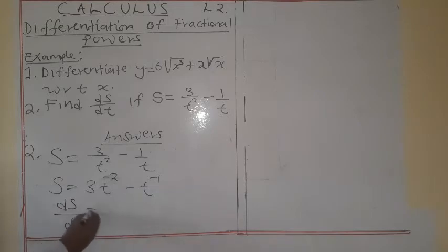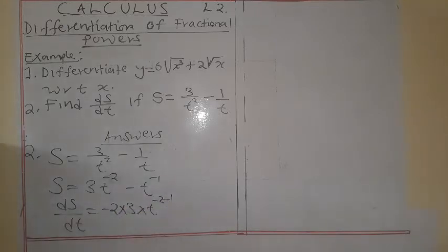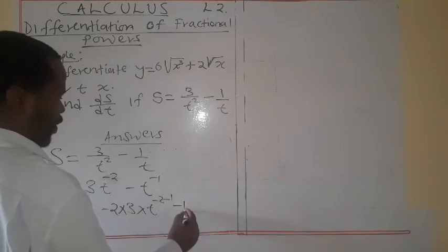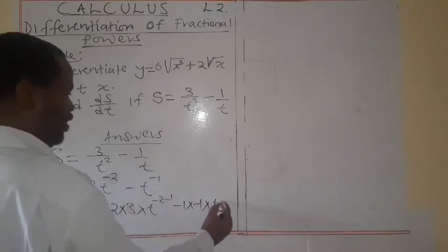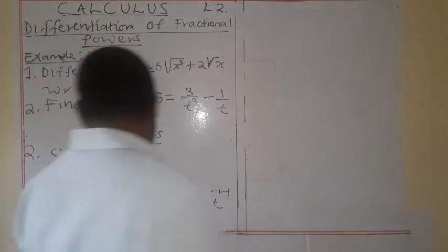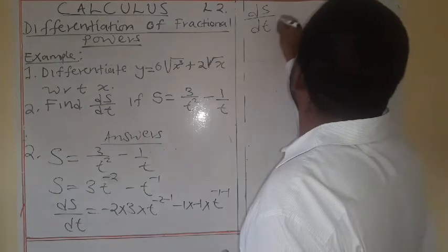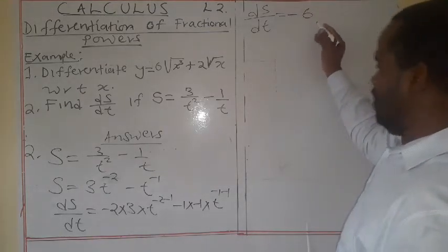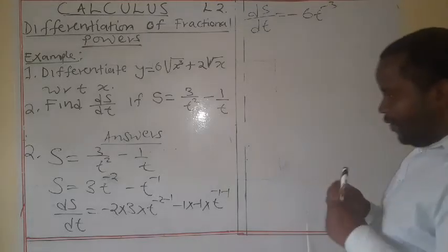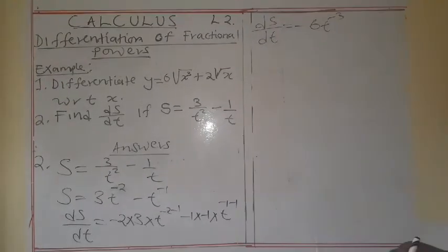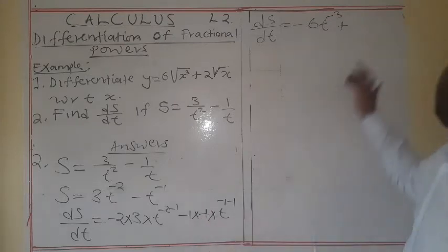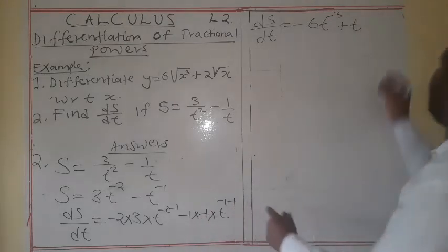ds/dt is equal to: the power is negative 2 times 3, times t to the negative 2 minus 1. Now here take note: our power is negative 1, times the coefficient is negative 1, times t to the negative 1 minus 1. So ds/dt is equal to: when you multiply here you get negative 6. So negative 6, t to the negative 3. Here negative 2 minus 1 is negative 3. Negative times negative will be plus. 1 by 1 by t you have got t. Negative 1 minus 1 is negative 2.